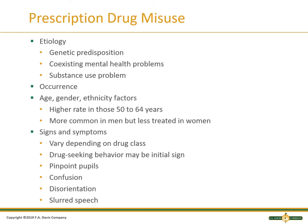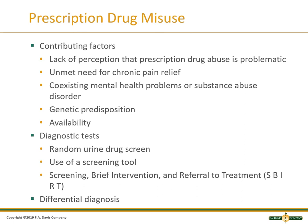Signs and symptoms can vary depending on the drug class. Drug-seeking behavior may be the initial sign — they may have chronic pain they constantly want medication for, may say they lost their medicine, or claim they're always anxious and need it. They could be confused, disoriented, or have slurred speech, claiming they're just tired. Lack of perception that prescription drug abuse is problematic is a contributing factor. As a prescriber, paying attention to what medications they're on and how often you're giving them is your responsibility. You'll notice an unmet need for chronic pain relief, other mental health problems, substance abuse, genetic predisposition, and general availability of the medication.